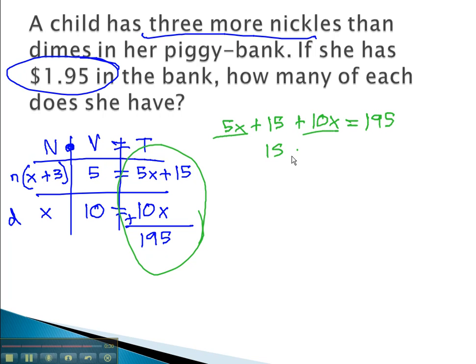Combining like terms, 15x plus 15 equals 195. Subtracting 15, 15x equals 180, and dividing by 15, we get x is equal to 12.